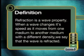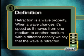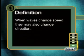Images form when we use lenses because light is refracted when it moves through a lens. Can you recall how to define refraction? Refraction is a wave property. When a wave changes its speed as it moves from one medium to another medium with a different density, we say that the wave is refracted. When waves change speed, they may also change direction.